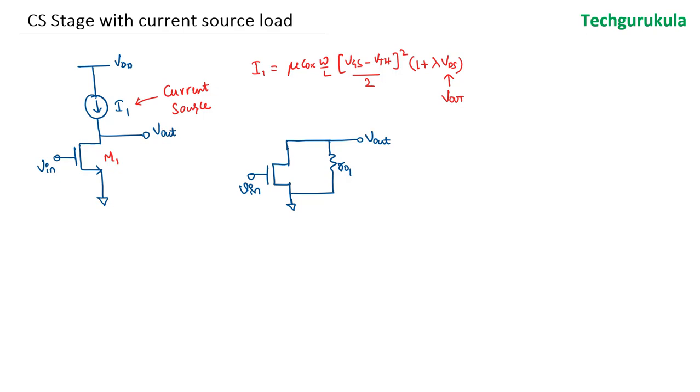Due to the input voltage change, we have Gm times Vgs here. Vgs is equal to Vin. Hence, the output voltage Vout will be equal to minus Gm times Vin times R01. In fact, we should say this is Gm1 as we are saying it is R01. So the voltage gain, which is Vout over Vin, which is equal to minus Gm1 times R01.